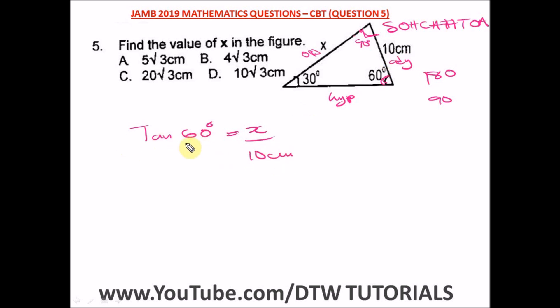So from here, what is tan 60 from your table? I always advise you to know your ratios for tan 30, sine 30, cos 30, also for 60, for 45, and also for 90. Make sure before you enter the exam hall you have this at heart.